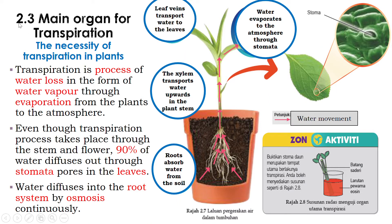Welcome back to 2.3 - Main Organ for Transpiration. We are going to recall the meaning of transpiration, which is the process of water loss in the form of water vapor through evaporation from the plants to the surrounding. We know that transpiration takes place all over the parts of the plant.